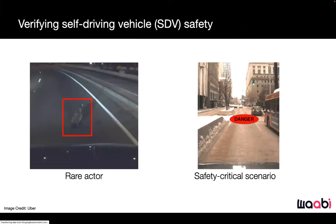As Raquel mentioned earlier, we've talked in the past section of this tutorial about all the components required to build a highly performant self-driving system. But the key question left over from the data section was: how do we test this autonomous system safely before deploying it into the real world to make sure it can handle all the situations we might encounter — for example, rare actors or a vehicle coming out of occlusion?